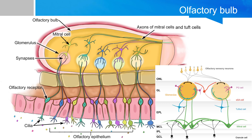These secondary neurons will eventually send their axons into the olfactory cortex. There is one more cell type called the granule cells, which are basically a modified version of interneurons that have only dendrites and no axons. They play a dampening effect on cell activities.